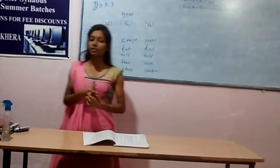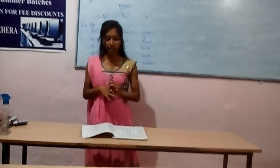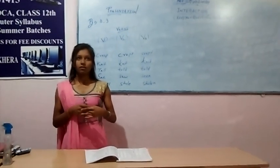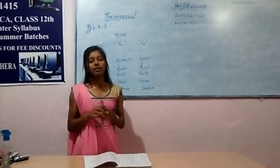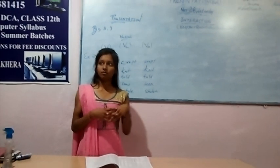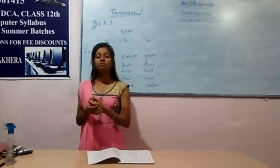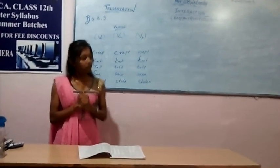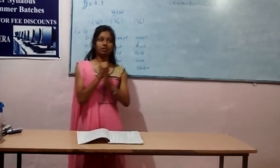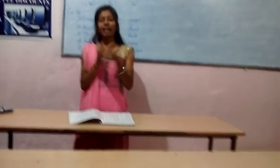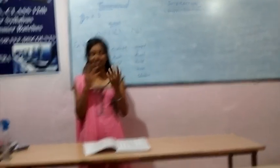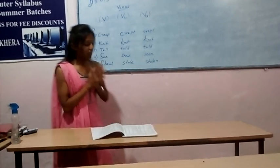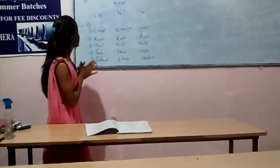There are the first form, second form, and third form. Today I will first tell you what a verb is, and then you can ask me the first form, second form, and third form of verbs. First of all, what is a verb? It is an action verb, it is a void verb. So here are some examples.